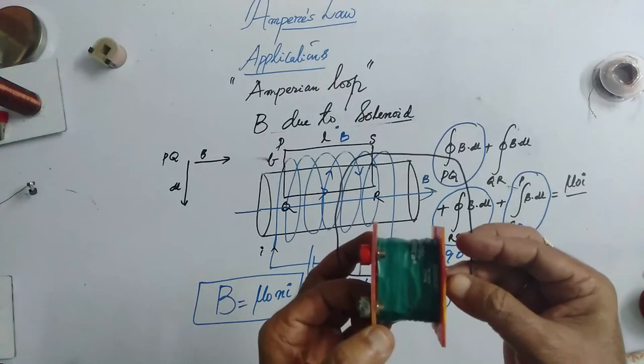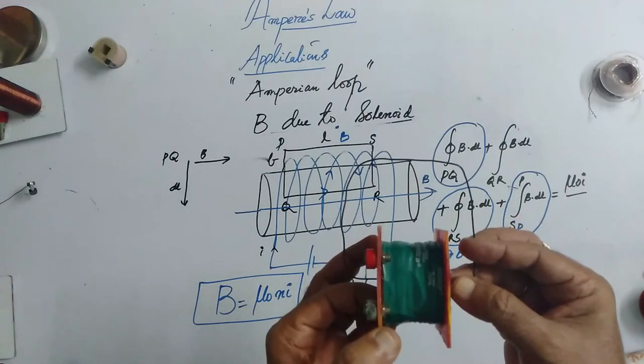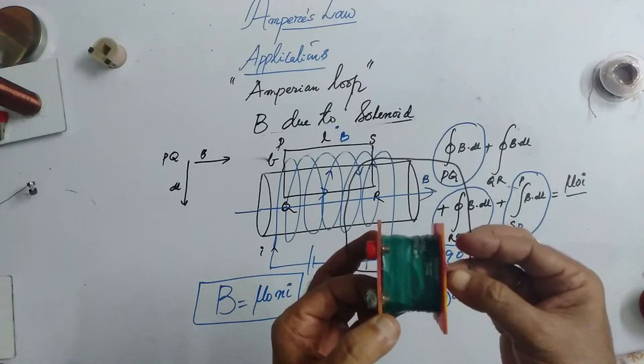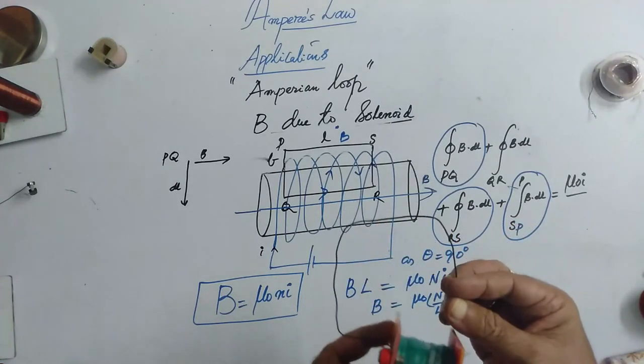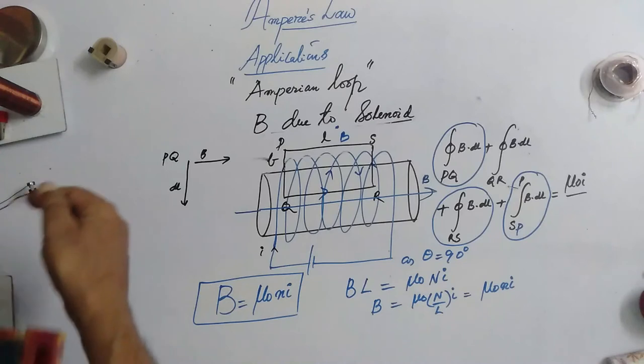Now, if you shift this L to that side, number of turns per unit length, we represent it with small n. So, B = mu 0 nI is the formula for this long straight solenoid.